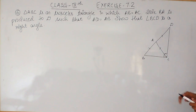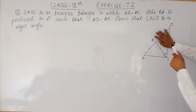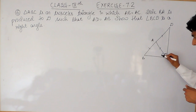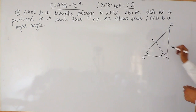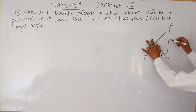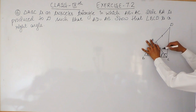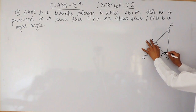We know that in a triangle, if two sides are equal, the angles opposite to those equal sides are also equal. So in triangle ABC, since AB equals AC, the angle opposite to AB must equal the angle opposite to AC. Similarly, since AD equals AC, the angles opposite to those equal sides must also be equal.